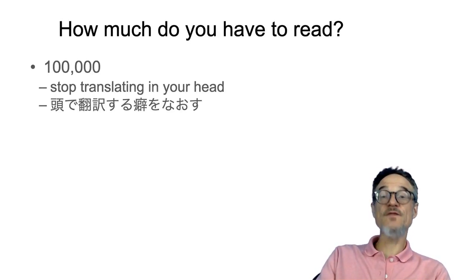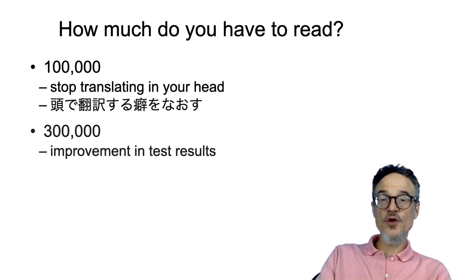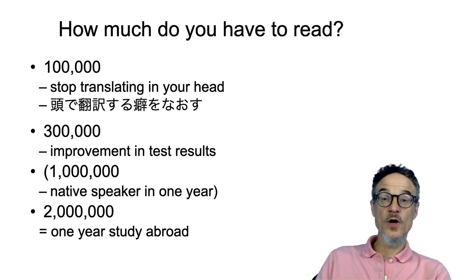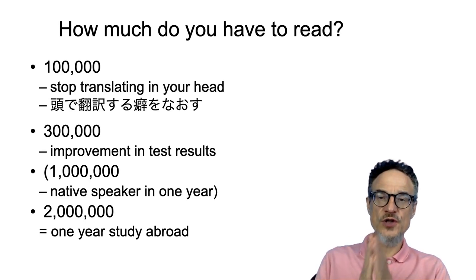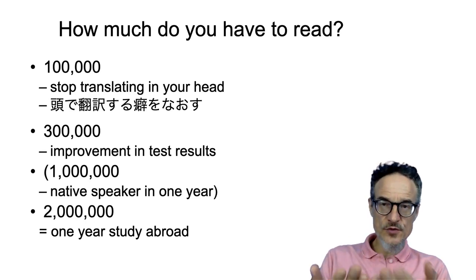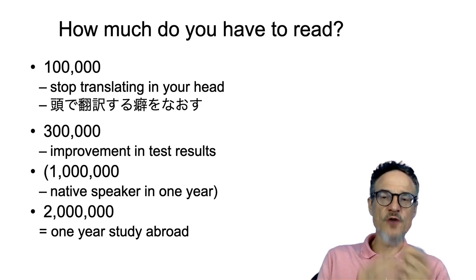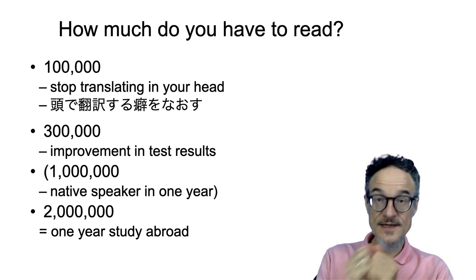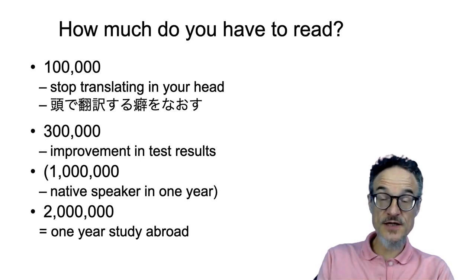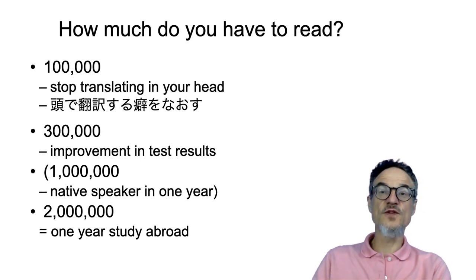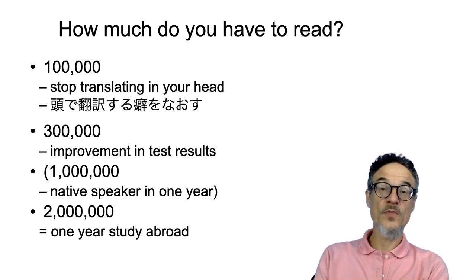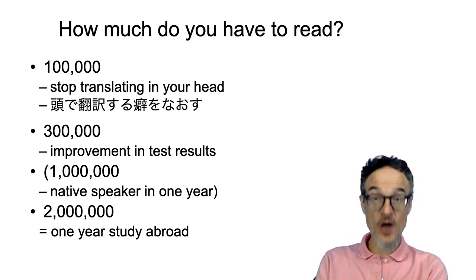You can also look at how many words you have to read. In order to stop your translation habit, you need to read about 100,000 words. When you start reading in a foreign language, you naturally translate everything into your own language — which you're very good at. But your foreign language, at the beginning, you're not very good at. When we see something unfamiliar, we want to convert it into something familiar, and that means translating. Translating means lots of work for your brain and not very easy work. But to get out of this habit, we need to read about 100,000 words.